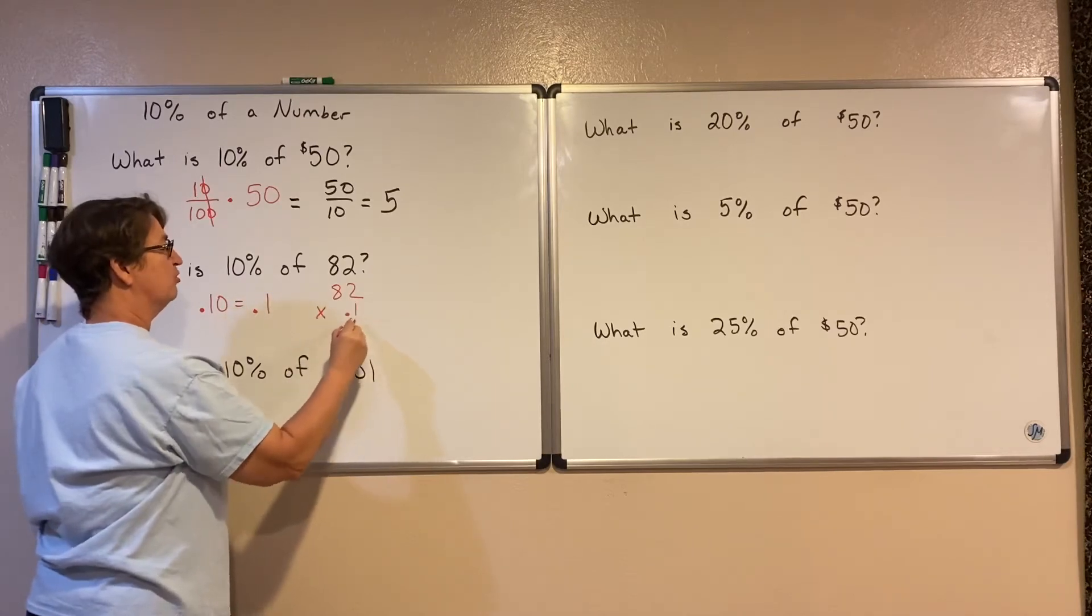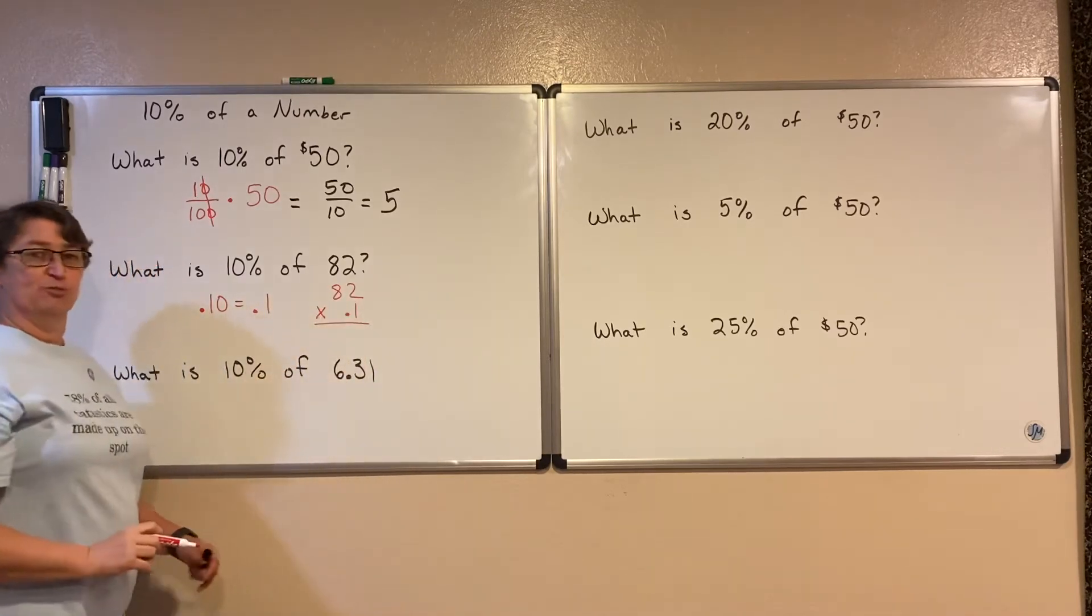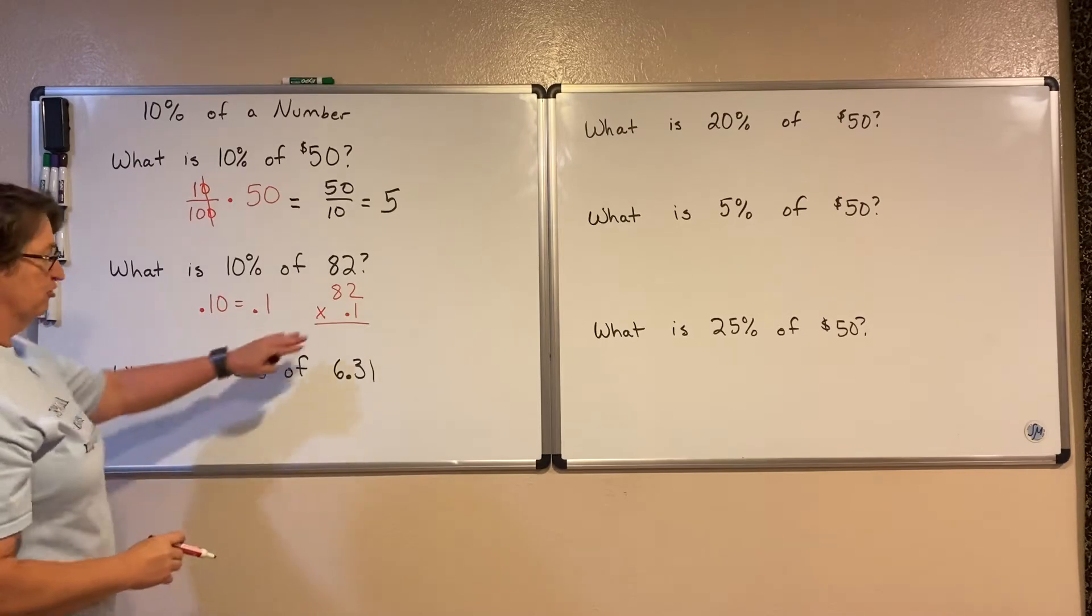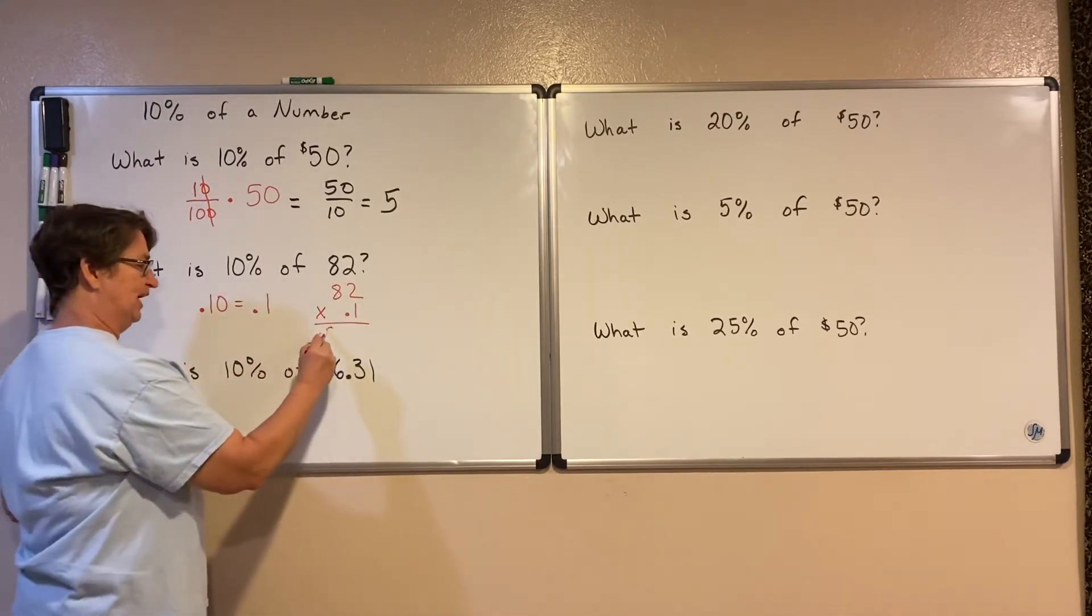When we multiply by a decimal, we ignore the decimal to begin with and just multiply. So this is really just 1 times 82, which gives me 82.